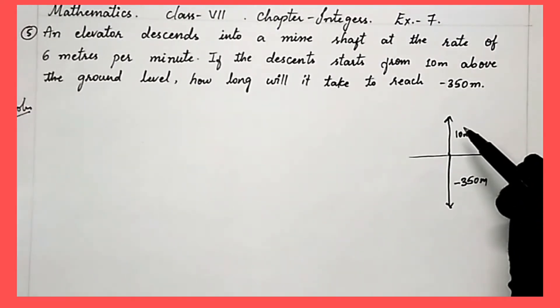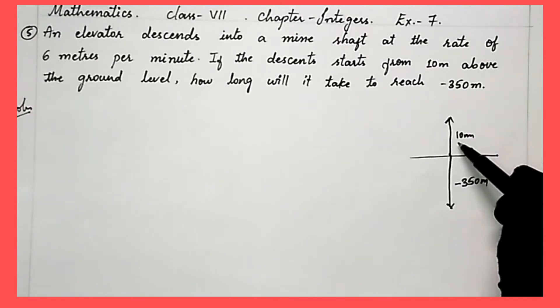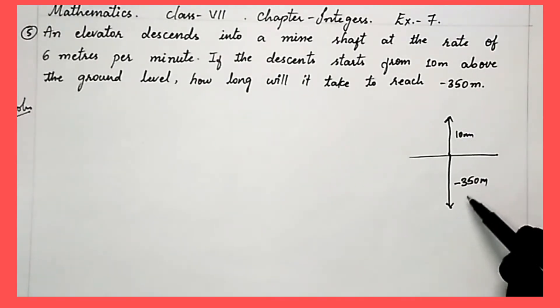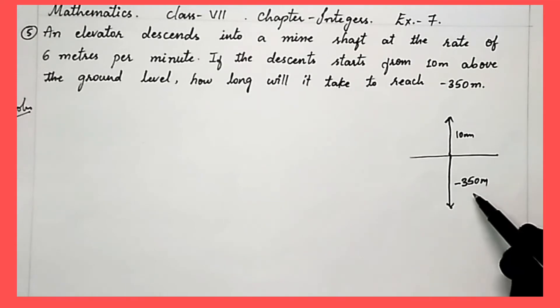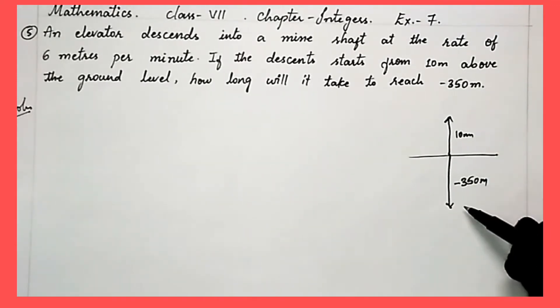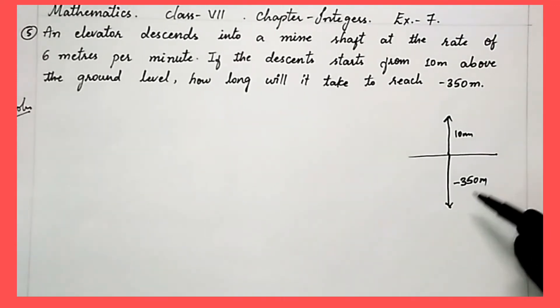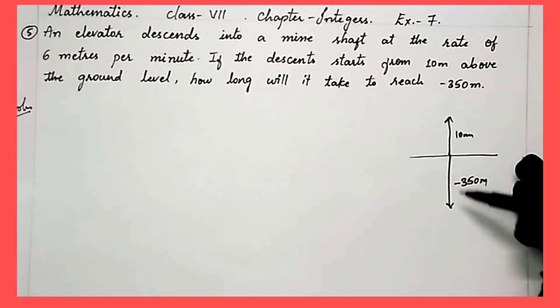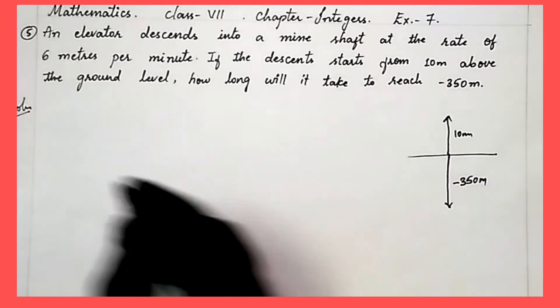The elevator is starting from 10 meters above the ground and reaching under the ground down to 350 meters. So the total distance the elevator is covering is 350 plus 10, which will be 360 meters.